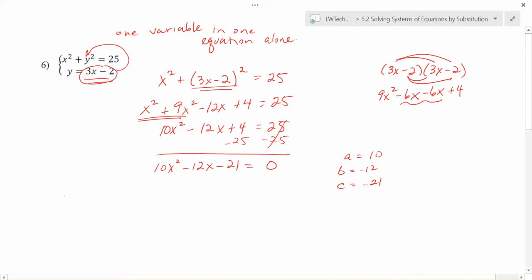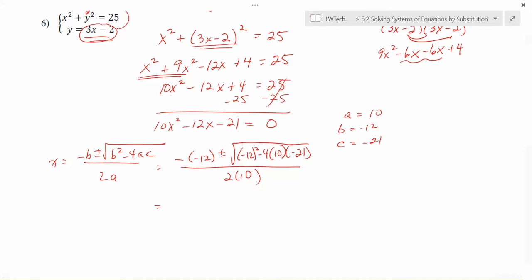So when we go in and try to solve this, x is equal to negative b plus or minus the square root of b squared minus 4ac all over 2a. Plugging our values in, that's going to be negative negative 12 plus or minus the square root of negative 12 squared minus 4 times 10 times negative 21, all divided by 2 times 10. All right, so let's go through and see how we can do.